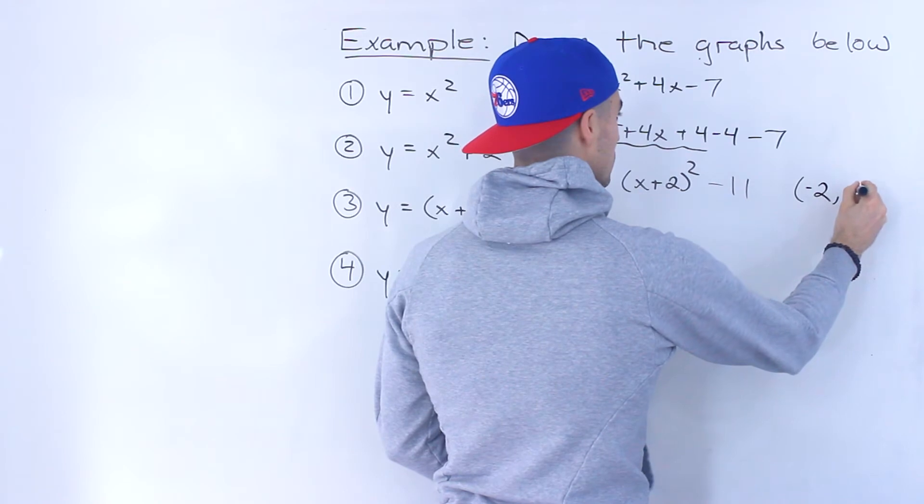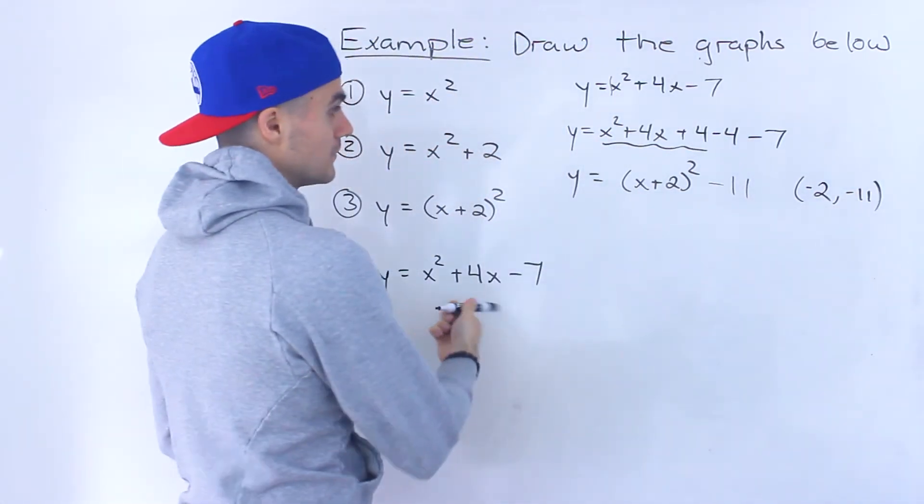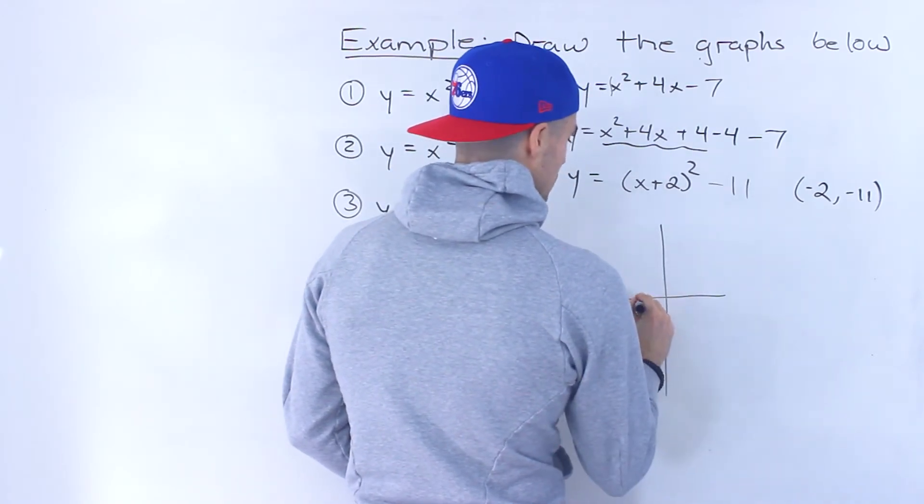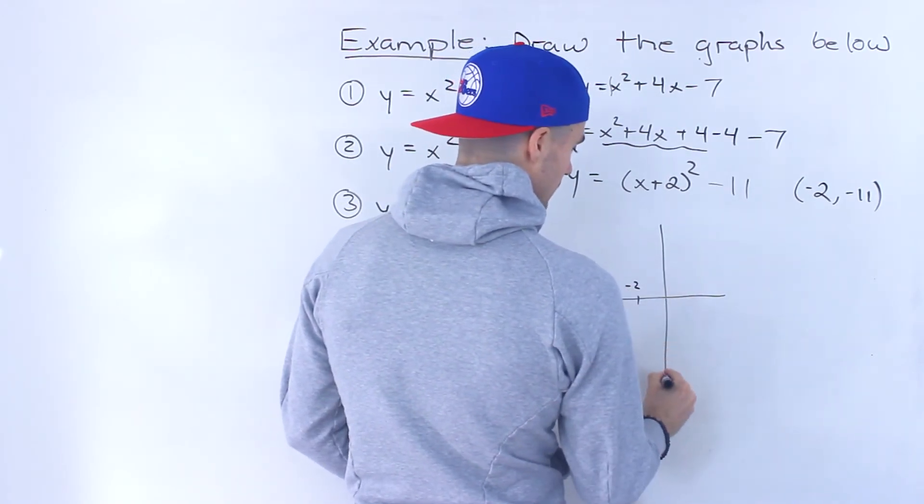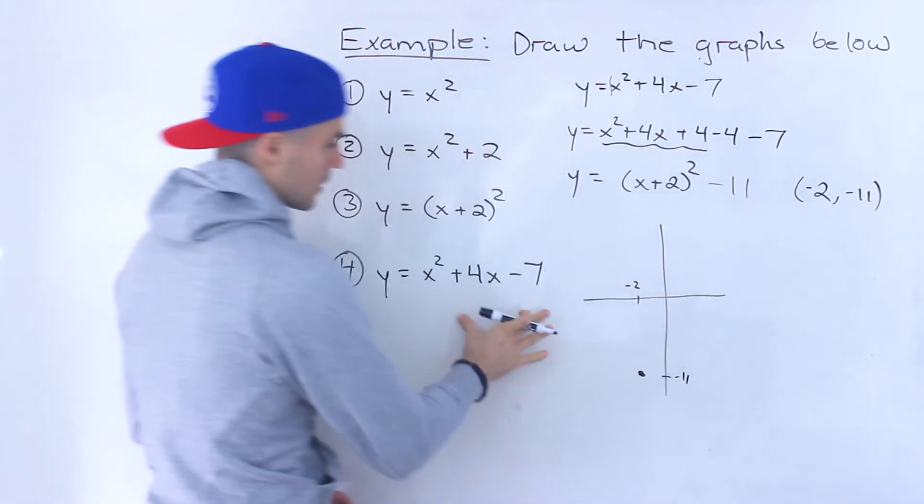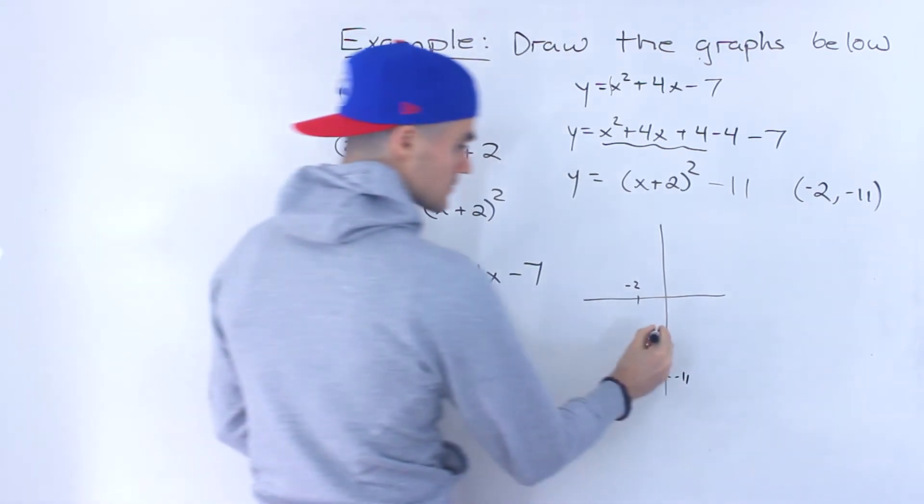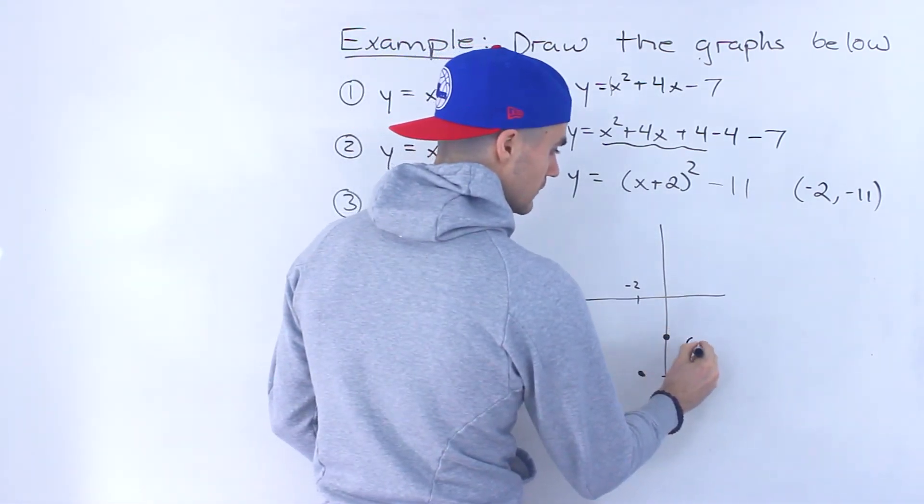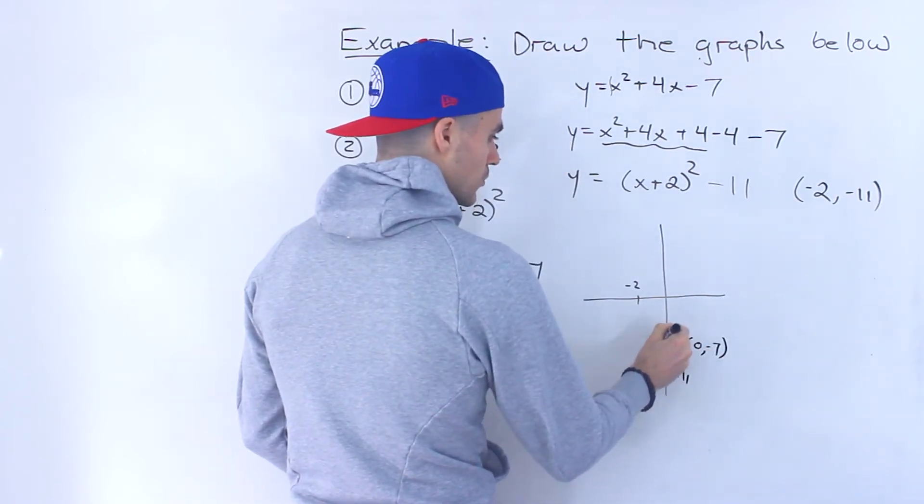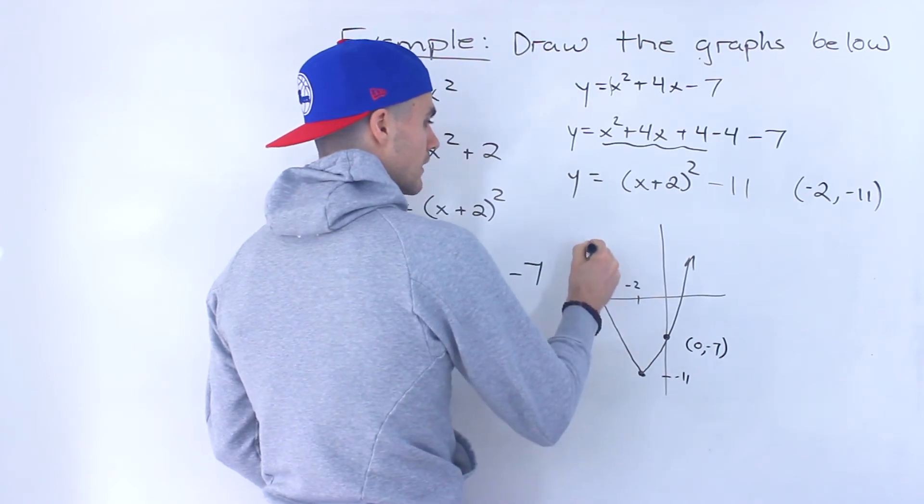And so from here, we could tell what's the vertex. The vertex is negative two and negative 11 of this parabola over here. So if we graph that, negative two, let's say is over here, negative 11, let's say it's like down here. Notice that from here, we could also tell what's the y-intercept pretty easily. If we plug in zero for x, we'd have zero minus seven over here. So we'd end up getting a parabola that basically looks something like this.